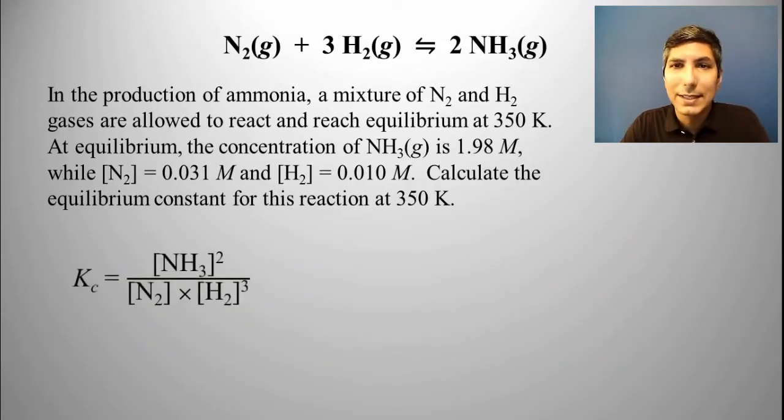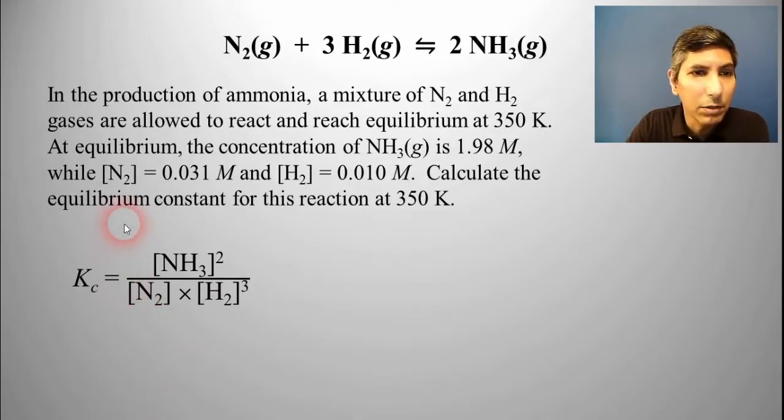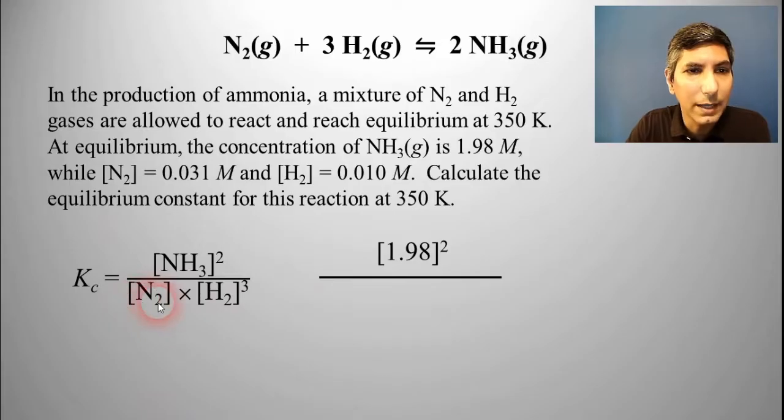So, we're going to use that same expression that we just wrote, products over reactants raised to the power of the coefficients. We're just going to plug and chug. If we're trying to find the equilibrium constant, we're going to solve for KC. The concentration of ammonia is given to us as 1.98 molar. So, that goes in for NH3, and of course, that's going to be squared.